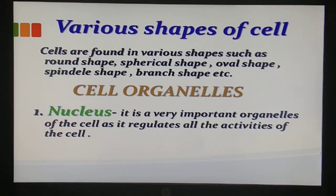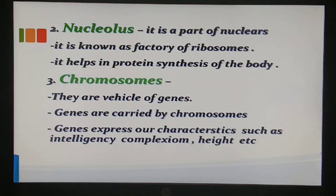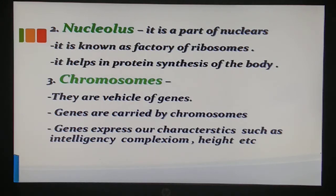We'll be discussing the plasma membrane and its activities later on. The nucleus is a very important organelle of the cell because it regulates all the activities of the cell. The nucleolus is embedded inside the nucleus and is known as the factory of ribosomes. Ribosomes are tiny structures with which protein can be synthesized, which the body requires.